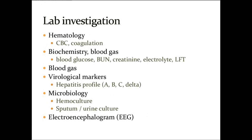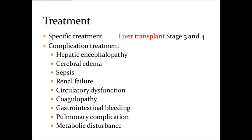For laboratory investigations, a CBC and coagulation profile should be done. Biochemistry, blood gases, blood glucose, blood urea nitrogen, creatinine, electrolytes, LFTs, and blood gases should be done. Virological markers from hepatitis A to E should all be done. Microbiology including hemoculture, sputum, and urine culture. EEG will also tell you the stage, as EEG is disturbed in stage two to three of hepatic encephalopathy.